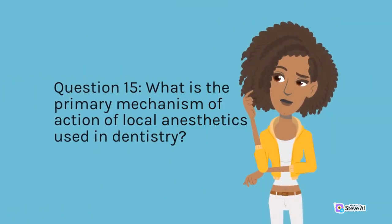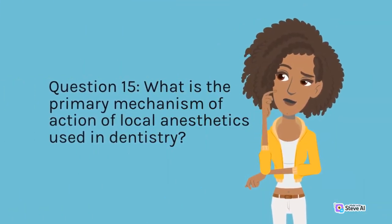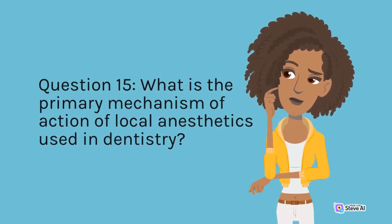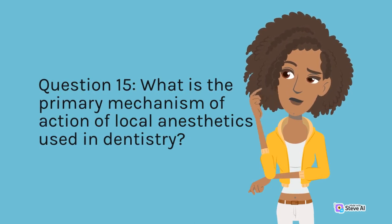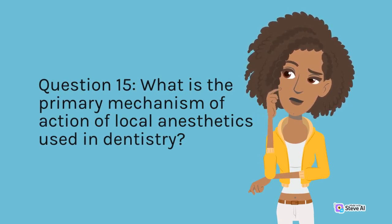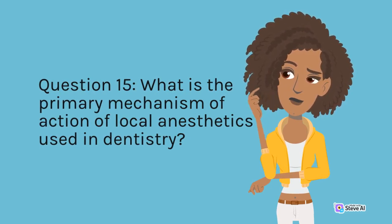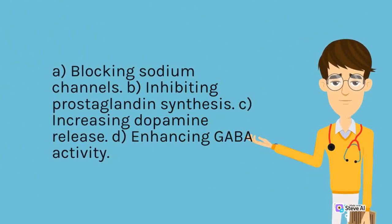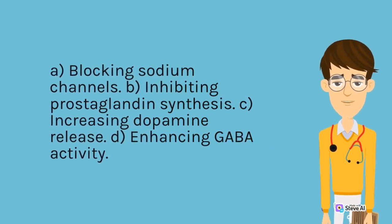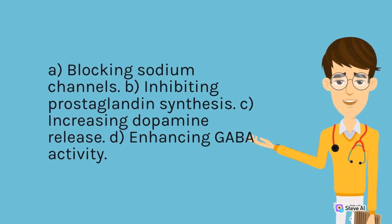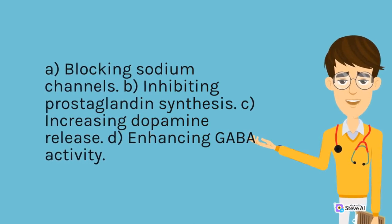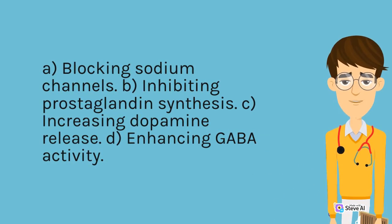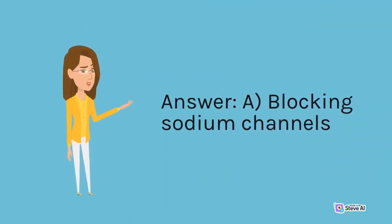Question 15. What is the primary mechanism of action of local anesthetics used in dentistry? A. Blocking sodium channels. B. Inhibiting prostaglandin synthesis. C. Increasing dopamine release. D. Enhancing GABA activity. Answer: A. Blocking sodium channels.